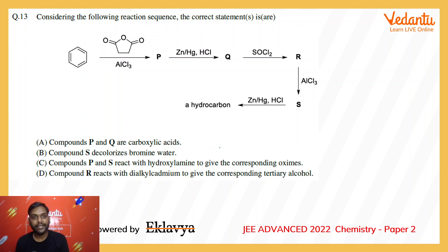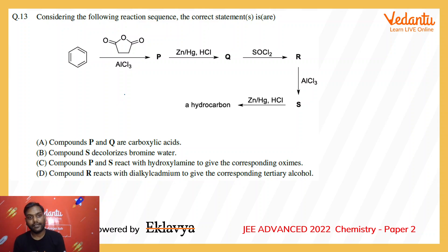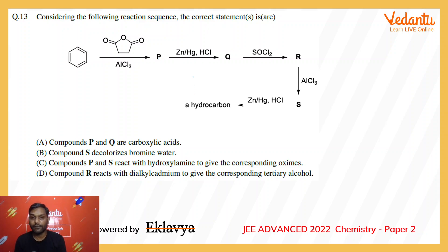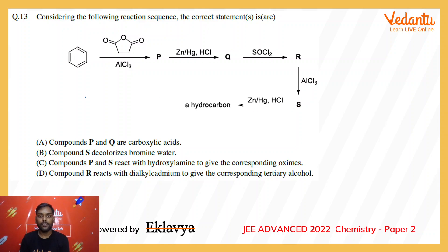The next question is from organic chemistry: benzene is reacting with anhydride in presence of AlCl₃ to form P. Then P is reacting with zinc amalgam and HCl — that is Clemmensen reduction — to form Q. Q reacting with SOCl₂ to form R, then R again with AlCl₃ forming S, and S with again Clemmensen reduction forming a hydrocarbon.